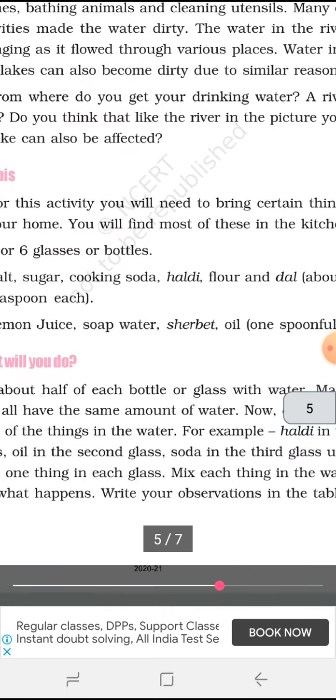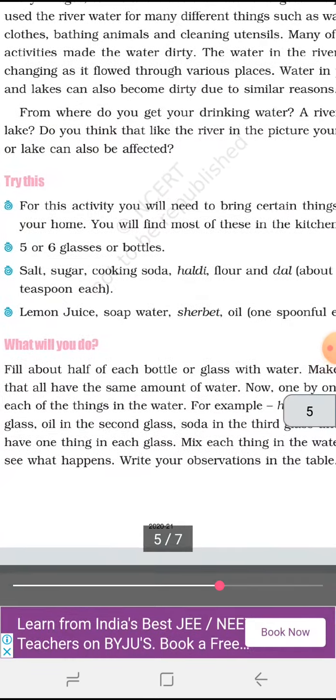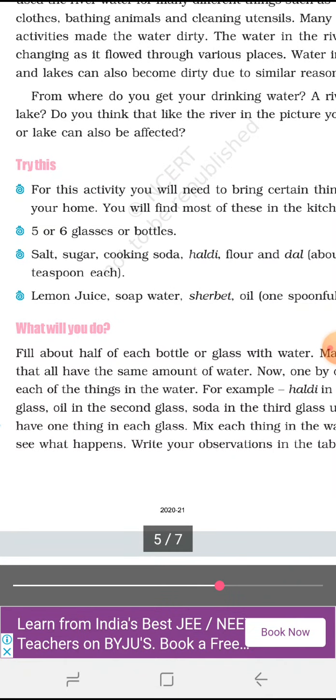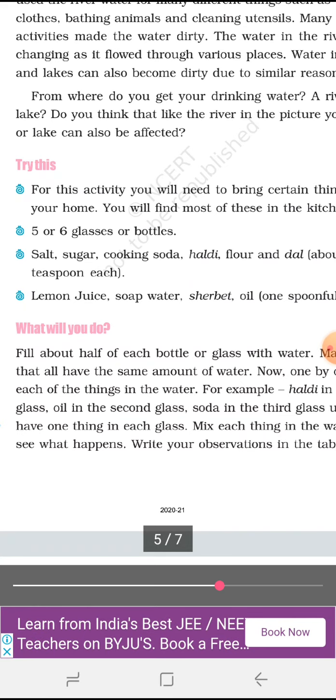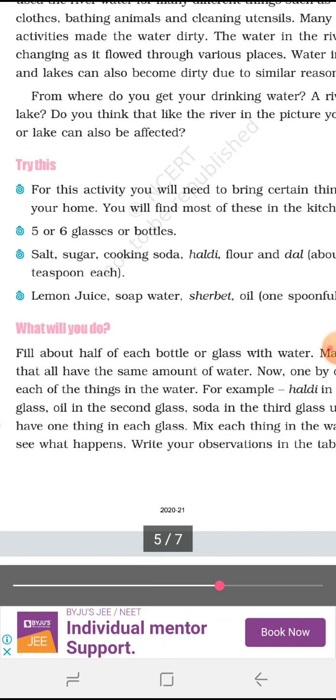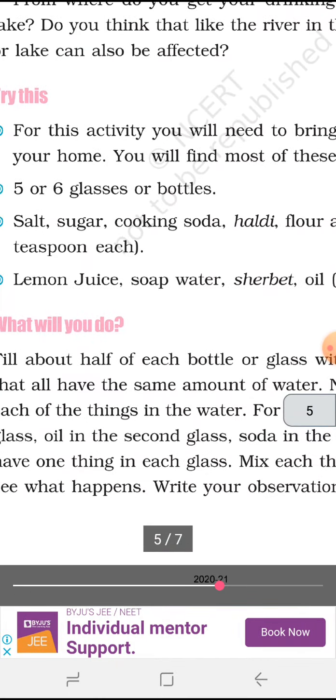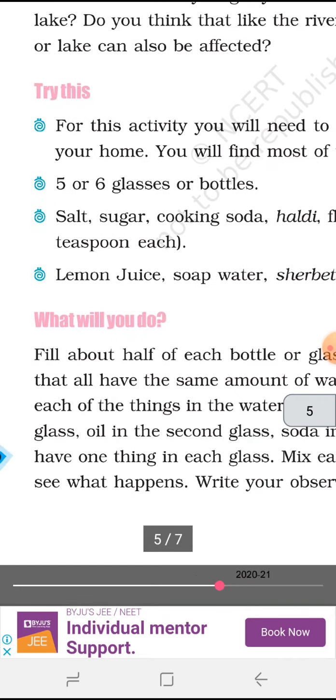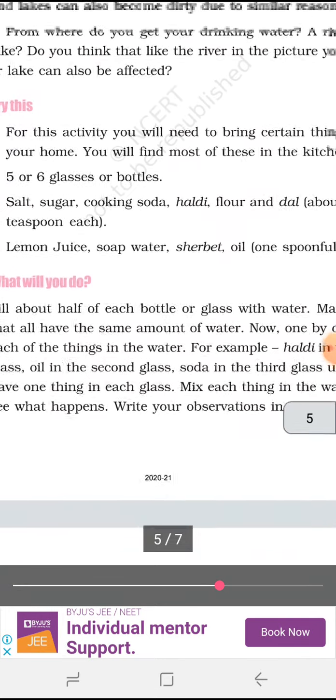For this activity, you will need to bring certain things from your home. You will find most of these in the kitchen. Five to six glasses or bottles. Let's discuss. What do we need? Five to six glasses or bottles. And for that, next, salt, sugar, cooking soda, haldi flour and dal. About half a teaspoon each. Half teaspoon, that is tea spoon. We need some salt, some sugar, some cooking soda, haldi flour. Then next is lemon juice, soap water, sherbet oil. One spoonful each. These are all the things. We need one full spoon of these.